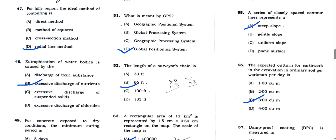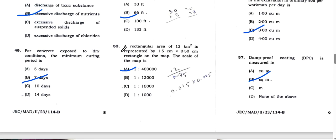Now we are going to discuss question number 51. What is meant by GPS? GPS means Global Positioning System, so option D is correct. Next question 53, rectangular area is 12 square kilometers ground distance and represented by map distance 1.5 by 0.5. If you consider the ratio of ground distance divided by map distance, you will find option A is the correct answer, that is 1 to 40,000.